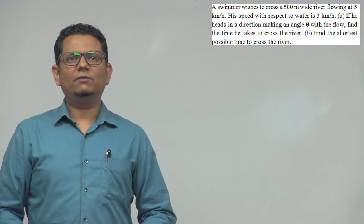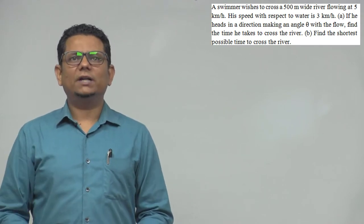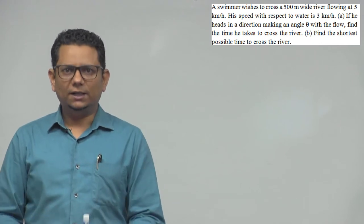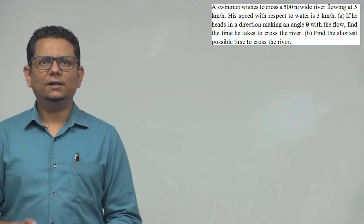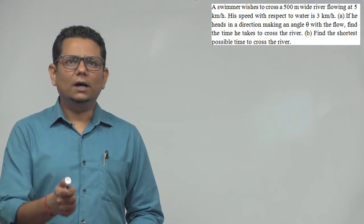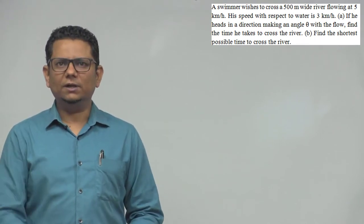Next question says: A swimmer wishes to cross a 500 meter wide river flowing at 5 km per hour. His speed with respect to water is 3 km per hour. There are two parts. First, if he heads in a direction making angle theta with the flow, find the time it takes to cross the river.